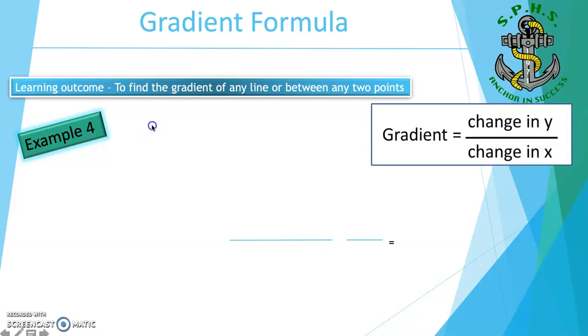Example 4. Find the gradient between the points (-2, 3) and (5, 4). First, I label the points x1, y1, x2, y2. Then I substitute into the formula.